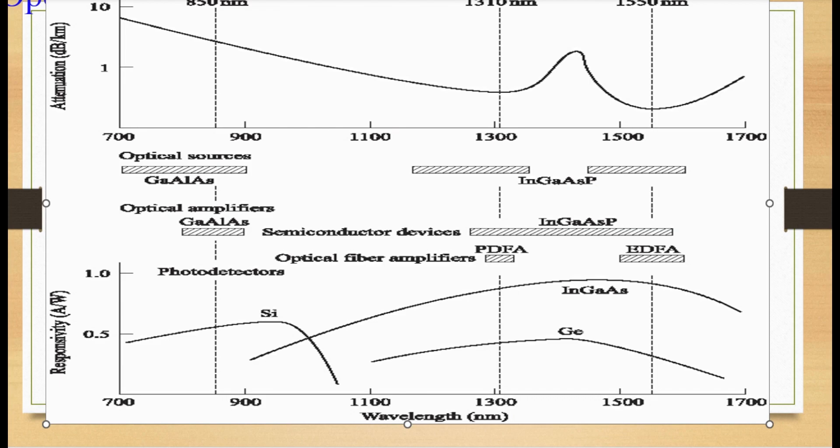Now, figure 1.4 shows the operating range of optical fiber system and the characteristics of four key components of a link: the optical fiber, light source, photodetector and optical amplifier. Here, the dashed vertical lines indicate the center of three main traditional operating wavelength bands. This is the first band, this is the second band and this is the third band.